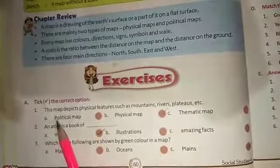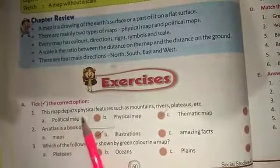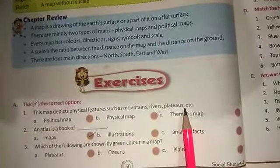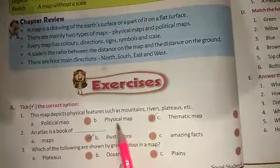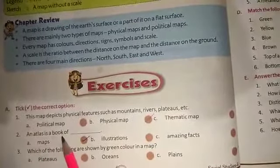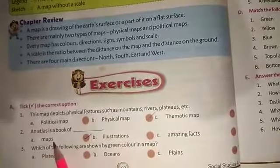1. This map depicts physical features such as mountains, rivers, plateaus, etc. And the answer is physical map. 2. An atlas is a book of A. Maps.